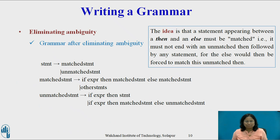We can rewrite this grammar as the following unambiguous grammar. The idea is that a statement appearing between a then and an else must be matched — it must not end with an unmatched then followed by any statement, for the else would then be forced to match this unmatched then. A matched statement either contains no unmatched statement, or it is any other kind of unconditional statement.